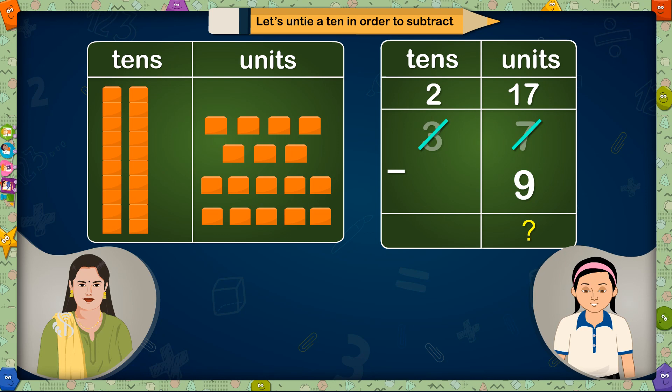Madam, 8 units will remain after reducing 9 units from 17 units. That's right! Only 2 tens are left in tens place, and I will write 2 in the answer. So 37 minus 9 equals 28.